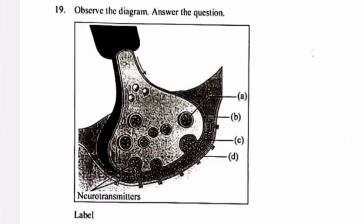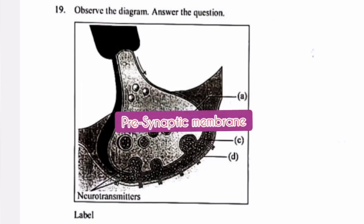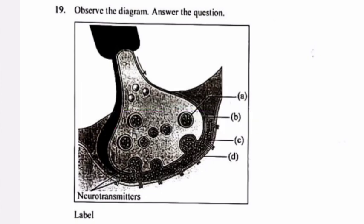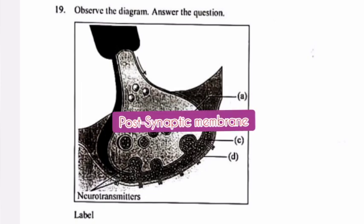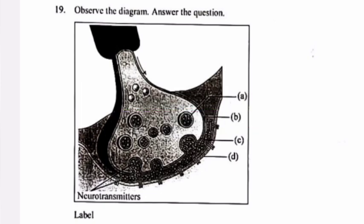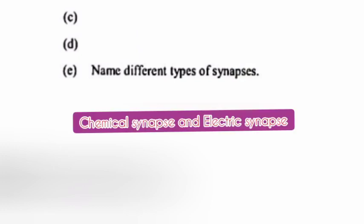Question 19. Observe the diagram and answer the questions. Label: A. Synaptic vesicle. B. Presynaptic membrane. C. Synaptic cleft. D. Post-synaptic membrane. E. Name the different types of synapses. Answer: Chemical synapse and electric synapse.